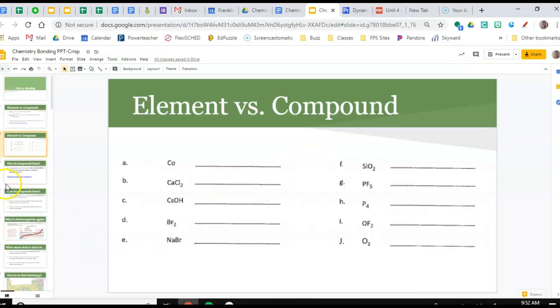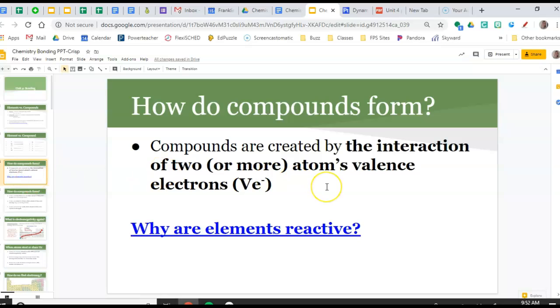Okay, so how do compounds actually form? Compounds are created by the interaction of electrons. We have to get into what's going on when two elements get near each other and what is happening with valence electrons, which are the ones that hang out on the outside of an atom.